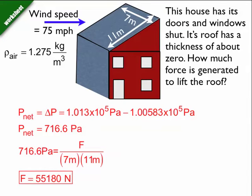is equal to the pressure inside the house, 1 atmosphere, minus my pressure outside, the 1.00583 times 10 to the 5 pascals. So the net pressure is equal to 716.6 pascals. So I can use this difference in pressure between inside and outside to calculate the force.